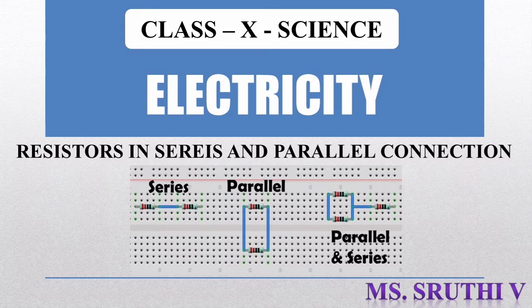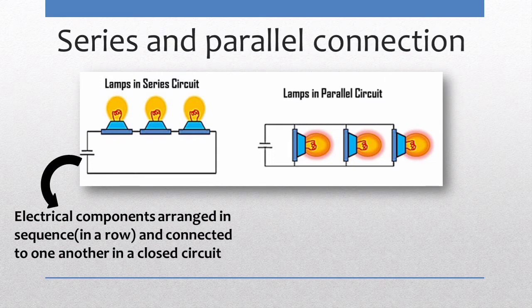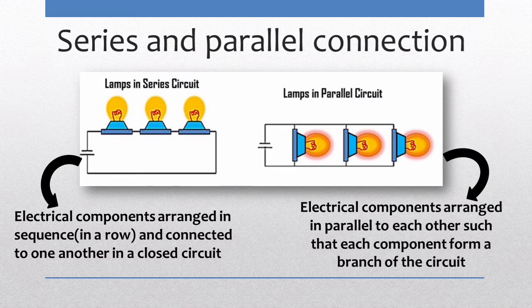Resistors in Series and Parallel Connection. A continuous conducting path consisting of wires and other resistances, switched between the two terminals of a cell or battery, is known as an electric circuit. In a series connection, electrical components are arranged in sequence in a closed circuit, whereas in a parallel connection, electrical components are arranged parallel to each other so that each component forms a branch of the circuit.